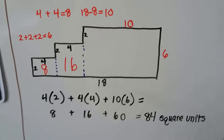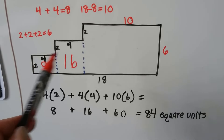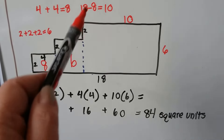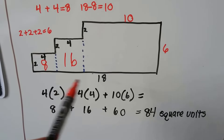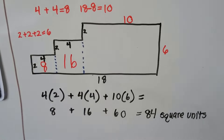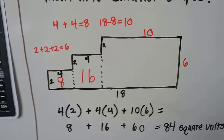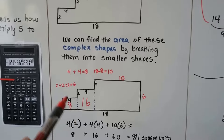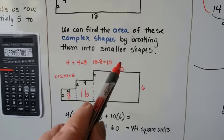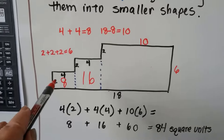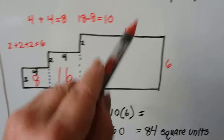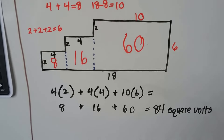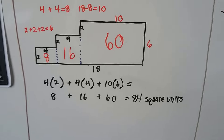And if this is a 4 and this is a 4 and this whole thing is 18, we can do 18 minus the 8 — the 4 plus 4 — to know that this missing piece is a 10. By adding the 4 and the 4 and taking it away from the big 18, we know now that it's a 10. So now we've got 10 times 6 is 60. All we have to do is add these three up and we'll have the area — 84 square units.